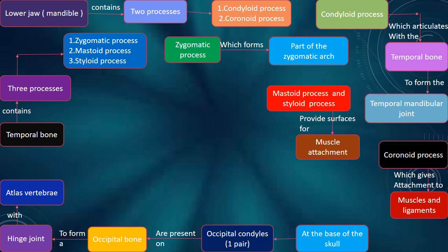The temporal bone contains three processes: zygomatic process, mastoid process, and styloid process. The zygomatic process forms part of the zygomatic arch. The mastoid process and styloid process provide a wide surface for muscle attachment.